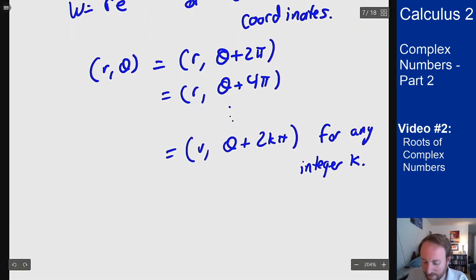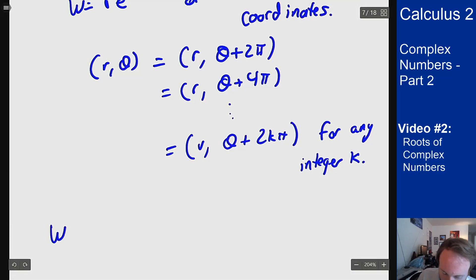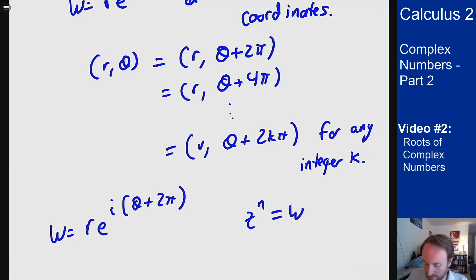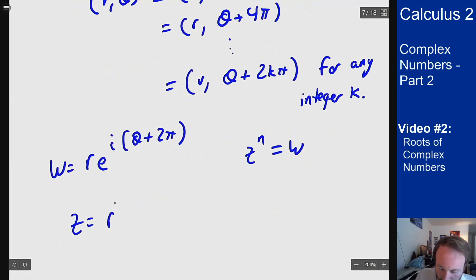So what does that mean? Well it means if I started with w is r e to the i theta plus 2 pi which is the same number and then I go to solve for my z's that solve z to the n equals w. How do we get to z here? We got to z by taking the nth root of the modulus which is still the same as it was before 1 over n, no big deal, but then I divided the angle by n.